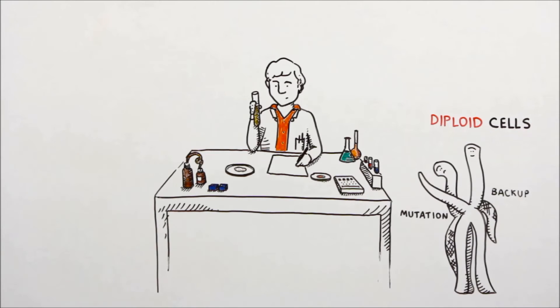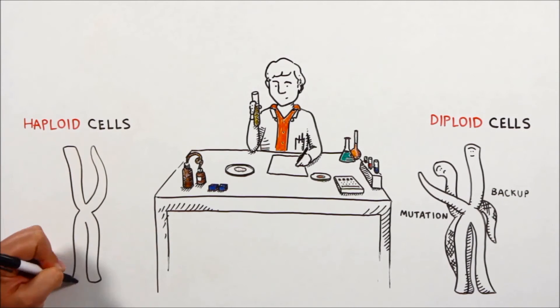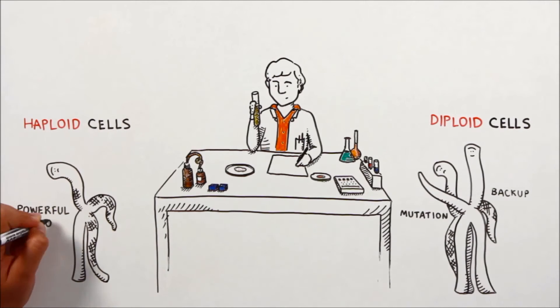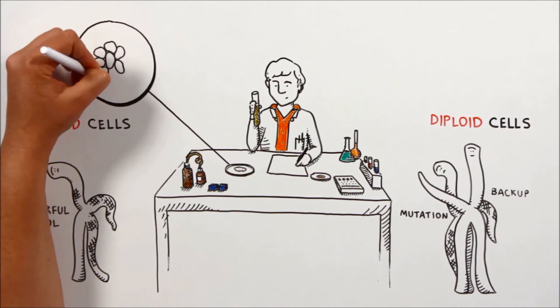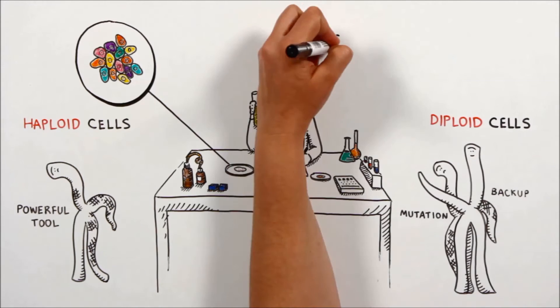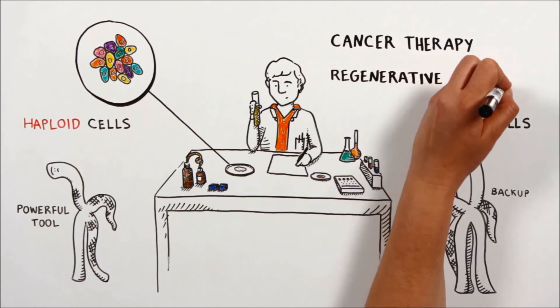The researchers were able to show that by virtue of having just a single copy to target, haploid human cells constitute a powerful tool for genetic screens. Being able to affect single copy genes in haploid human stem cells will greatly facilitate genetic analysis in biomedical fields, such as cancer therapy and regenerative medicine.